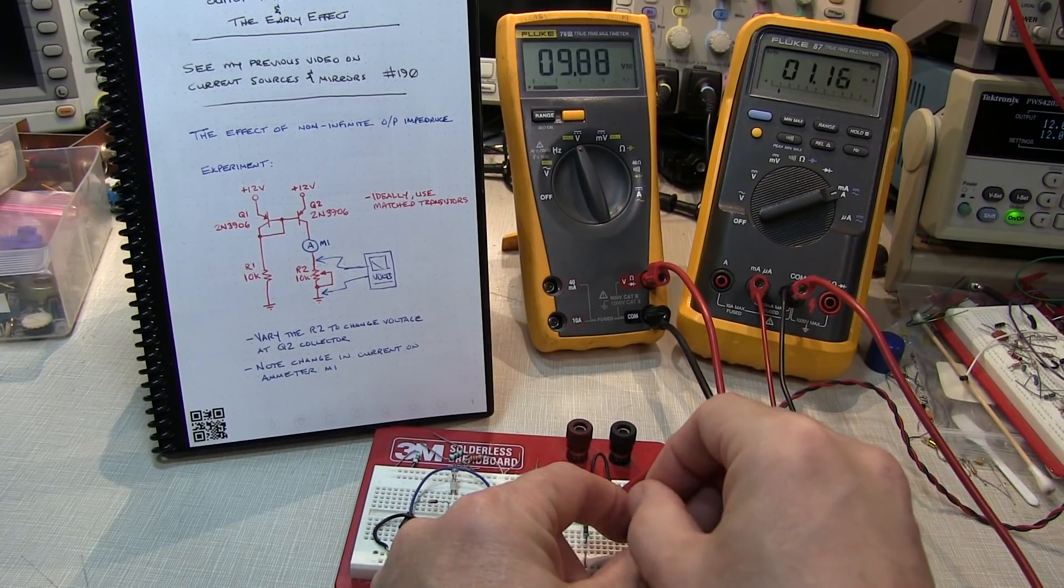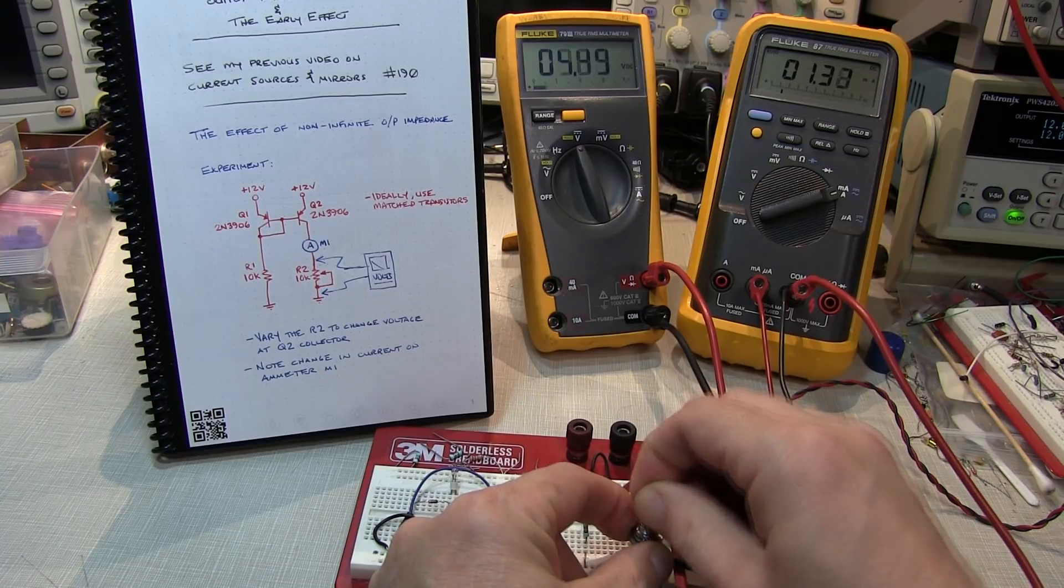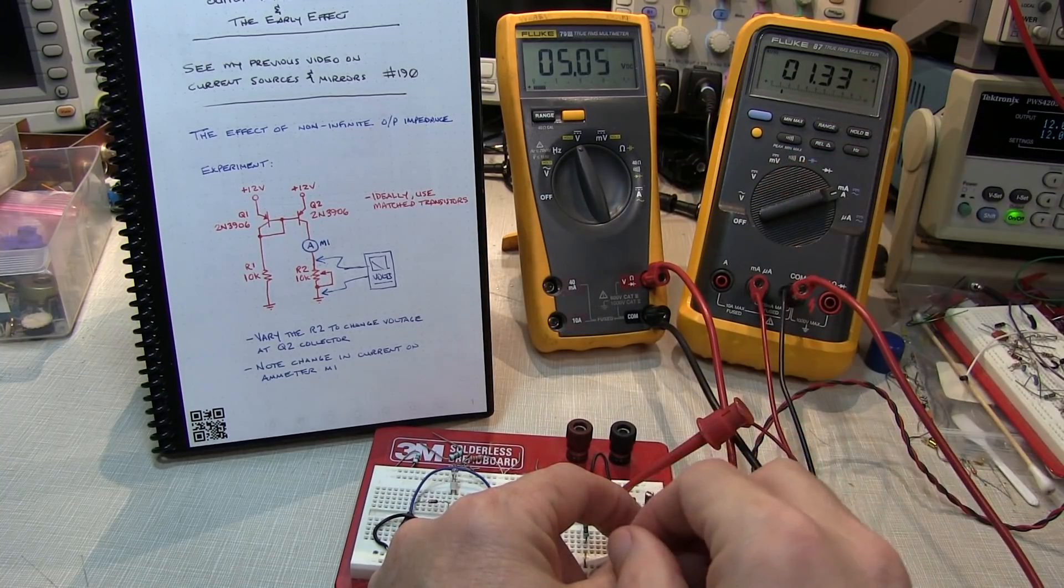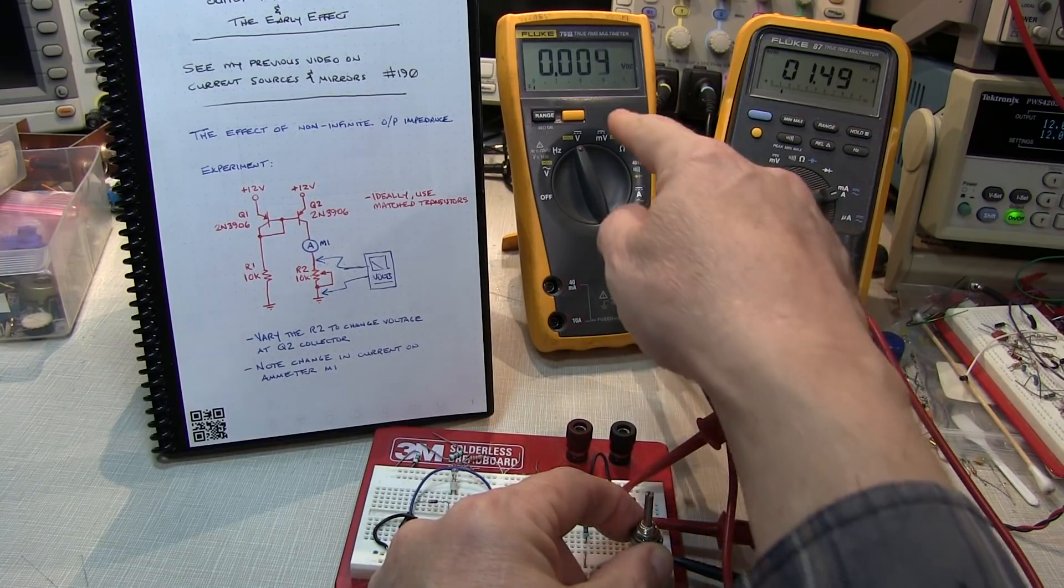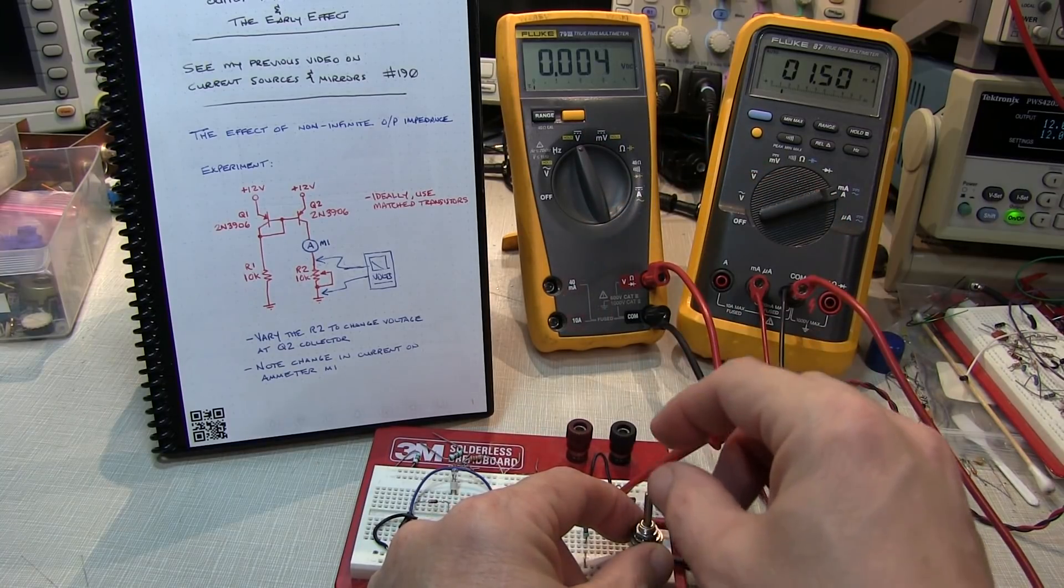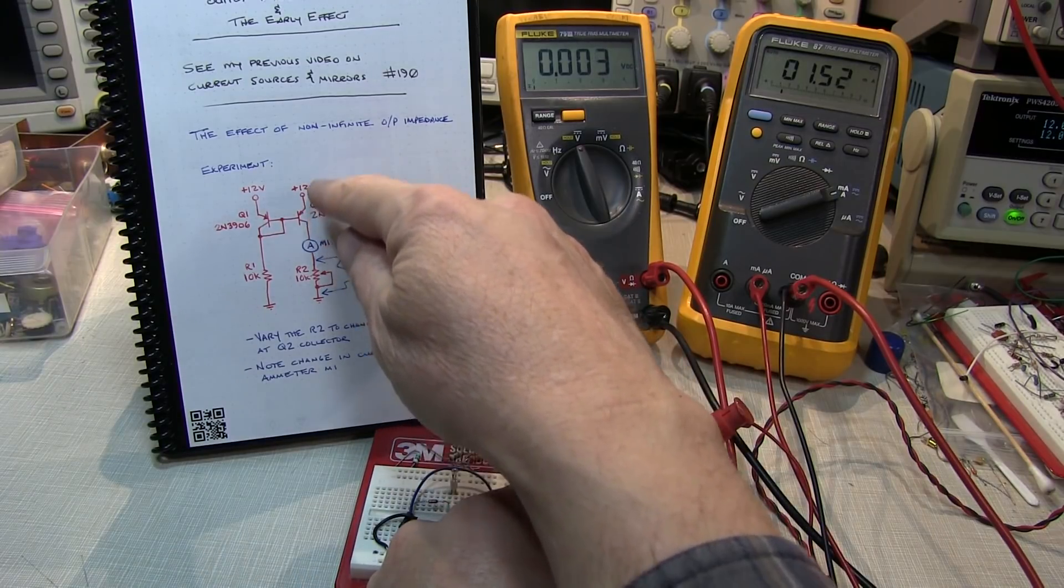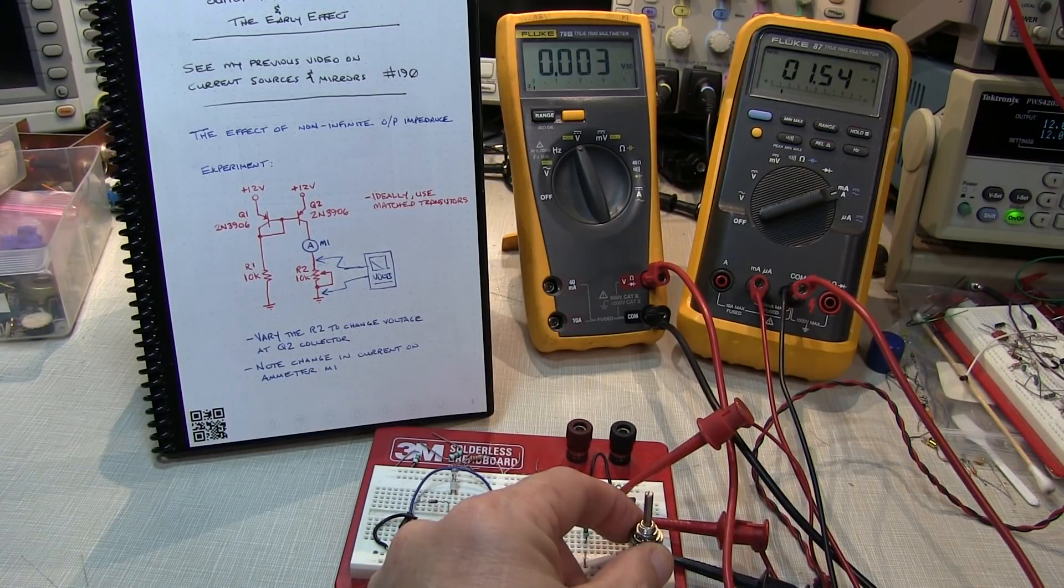I'm down to about 5V or so here, and at about 5V across that resistor, I'm up to 1.3 milliamps. I keep going down to the point where I shorted the resistor out. I essentially have no voltage there, so I've got that full 11.3V or so appearing across the emitter-to-collector of Q2, and now I'm at 1.54 milliamps.